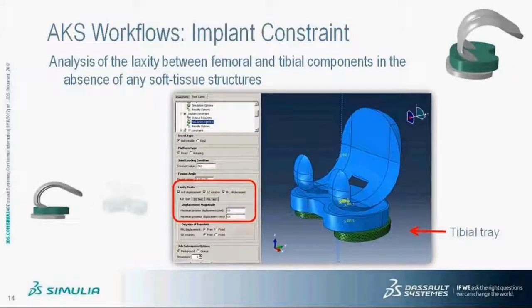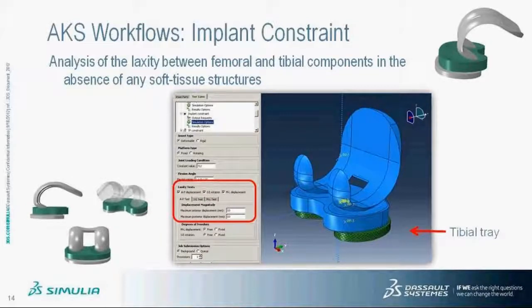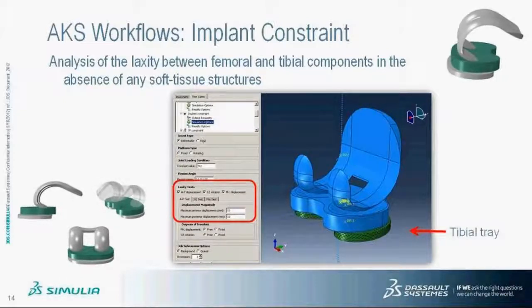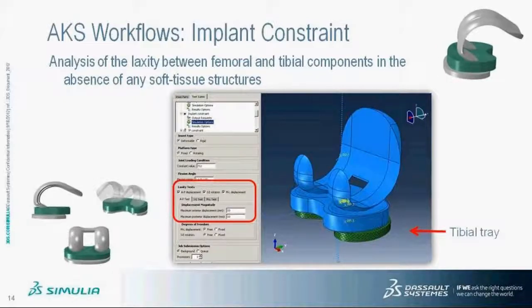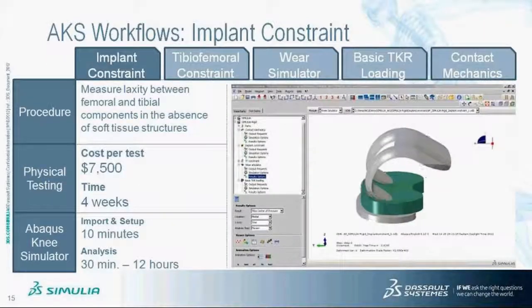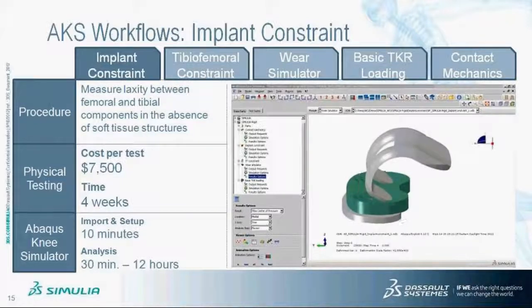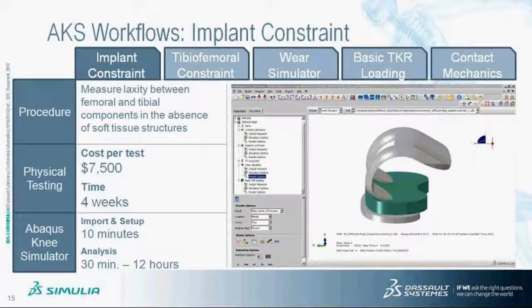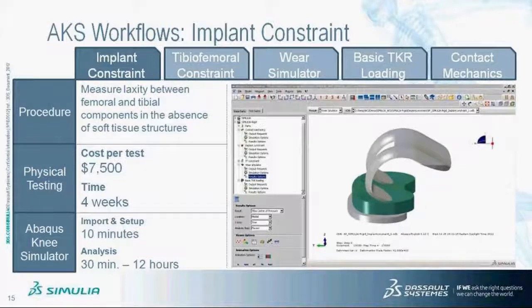Laxity tests provided for this workflow include the anterior-posterior displacement test, the internal-external rotation test, and the medial-lateral displacement test. For each laxity test, the load is applied as a boundary condition rather than a loading condition. The cost for performing a single laxity test physically is around $7,500 and takes roughly four weeks, while running simulations saves significant time and cost.